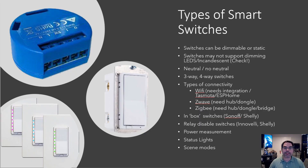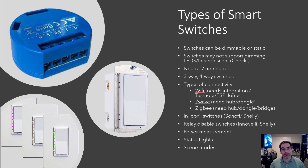Z-Wave and Zigbee are automation standards made for automation. A lot of these switches tend to cost a bit more, but if you buy them, you can typically interface them very easily with your home automation system, provided you have a hub or a dongle. Home Assistant is a great example — if you're running Home Assistant, you use a dongle, which is a USB stick that talks to these devices.